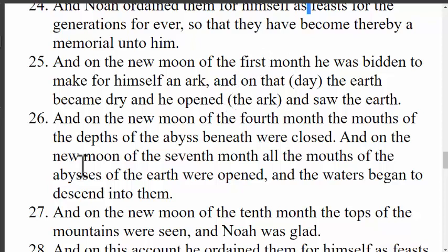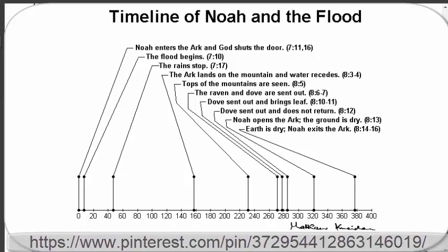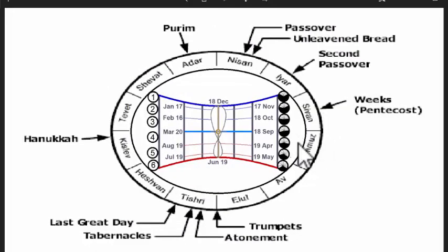So the first day of the first month represents both the beginning and the end of the flood. Then verse 26 talks about the fourth month, when it says, 'And on the new moon of the fourth month, the mouths of the depths of the abyss were closed.' This is talking about the end of the 40 days of rain that flooded the earth — it actually started on about the 17th day of the second month. If you count 40 days, you end up on about the new moon of the fourth month. So that was the rainy period, and the second day of remembrance is when the flood water stopped.